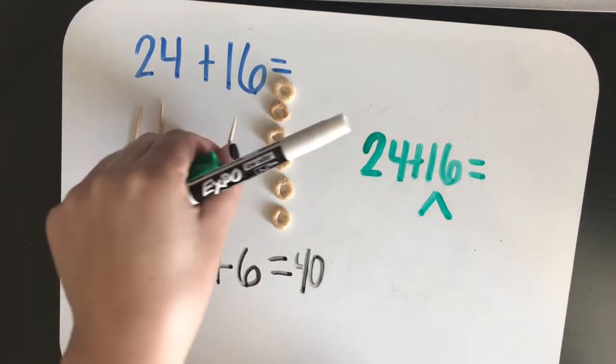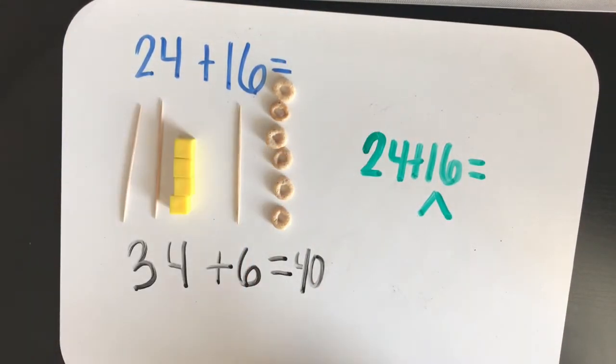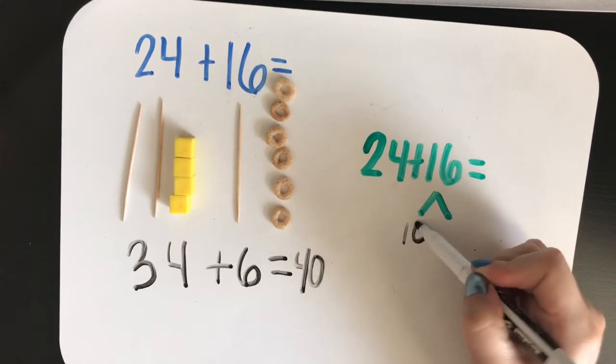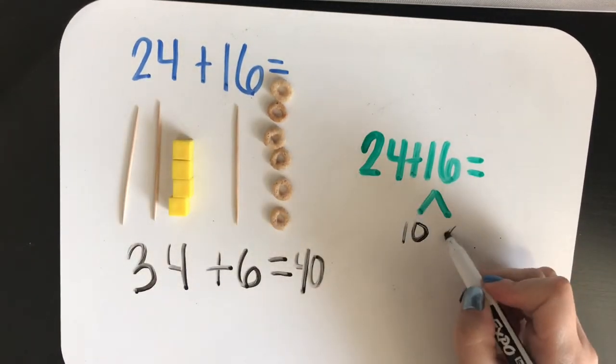Just like we did here. The smaller number, when broken apart, becomes a... Yes, a ten and a six.